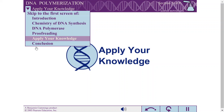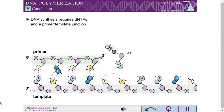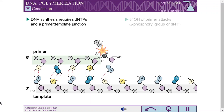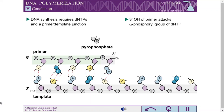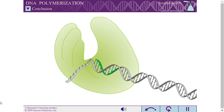In review: DNA synthesis requires deoxynucleoside triphosphates and a primer-template junction. The three-prime hydroxyl of the primer strand attacks the alpha phosphoryl group of the incoming dNTP. Additional free energy is provided by the rapid hydrolysis of the pyrophosphate leaving group. The main enzyme of DNA synthesis is DNA polymerase; due to its shape, three domains called the palm, fingers, and thumb have been described.